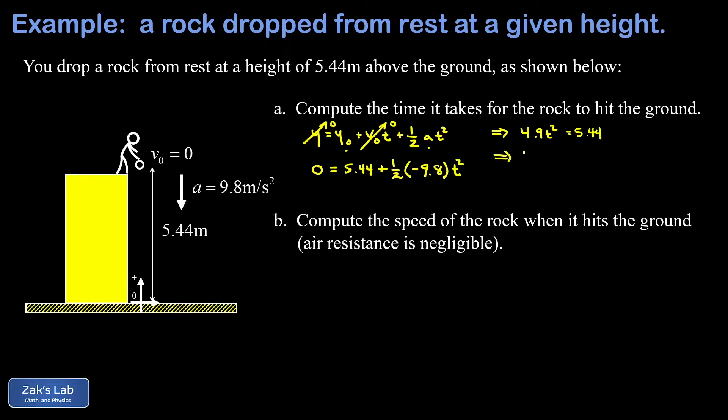Dividing by 4.9 on both sides, we can say that t squared is about 1.11. The units on that would be seconds squared. And finally, taking the square root and keeping just the positive answer here, t is going to be 1.05 seconds if we round to our traditional three significant digits.